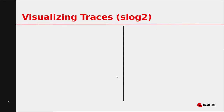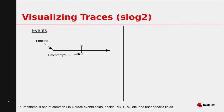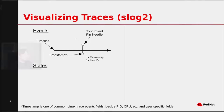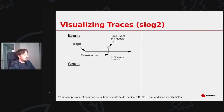How does Slot2 visualize traces? We have different topologies. One is events on a timeline. A timeline shows time from past to future. Events have a timestamp and are visualized as a pin needle — you see the pin and the needle on the timeline. This topology requires one timestamp and one line ID, where the line ID is the timeline ID.